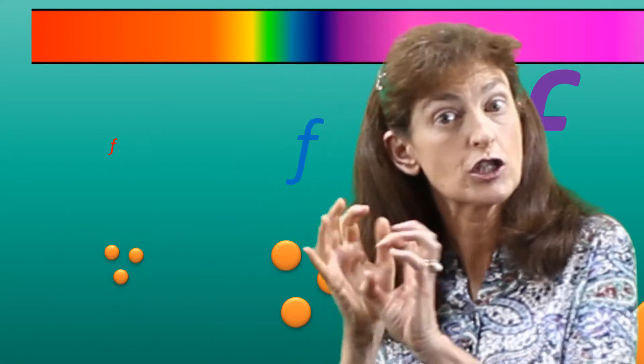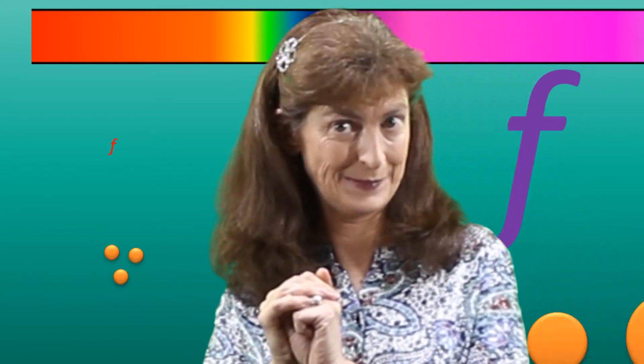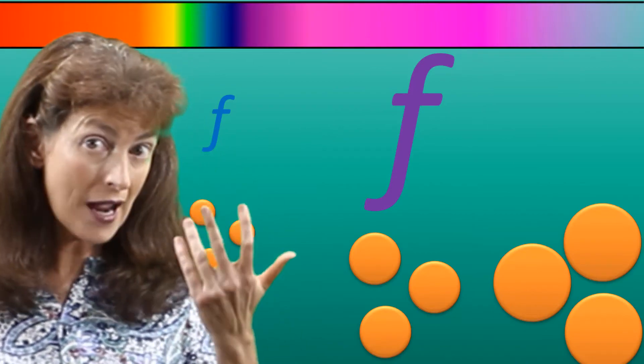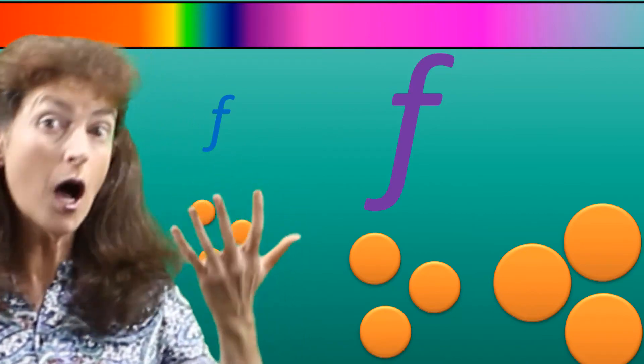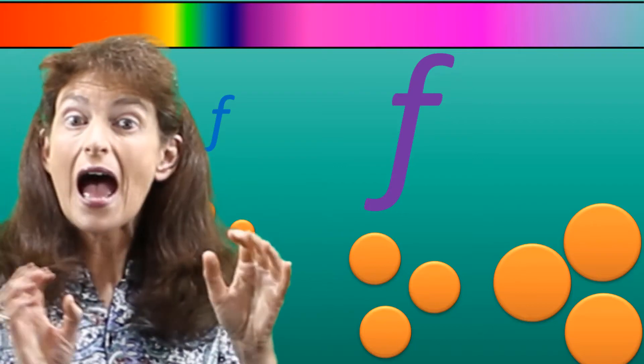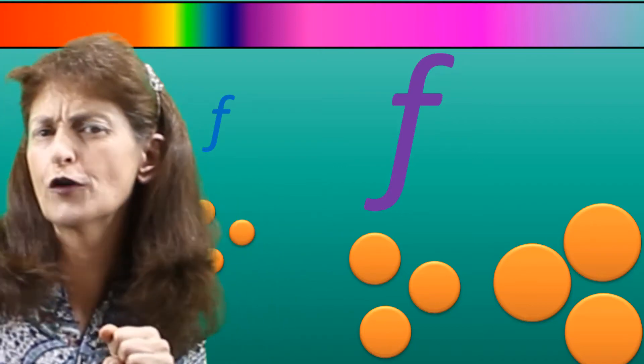Light of low frequency, red light for example, has very little energy in each of these packets. Whereas light of high frequency, blue light, ultraviolet light, they have a lot of energy in each photon.